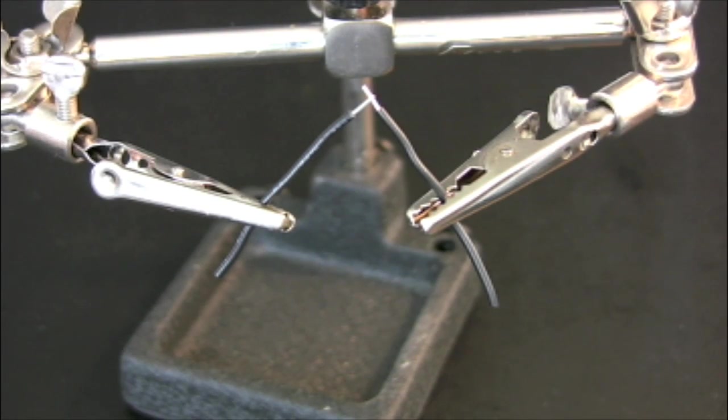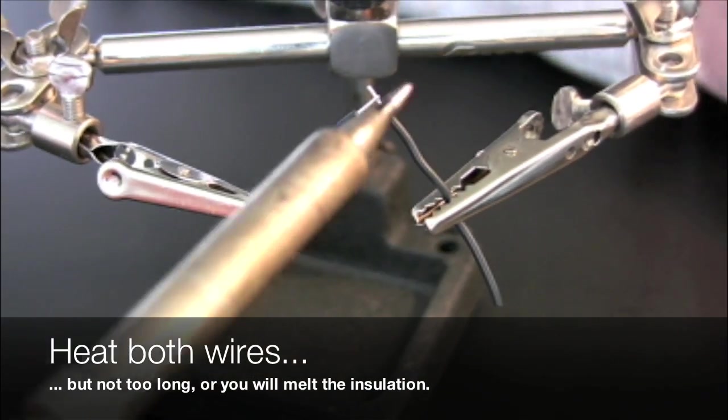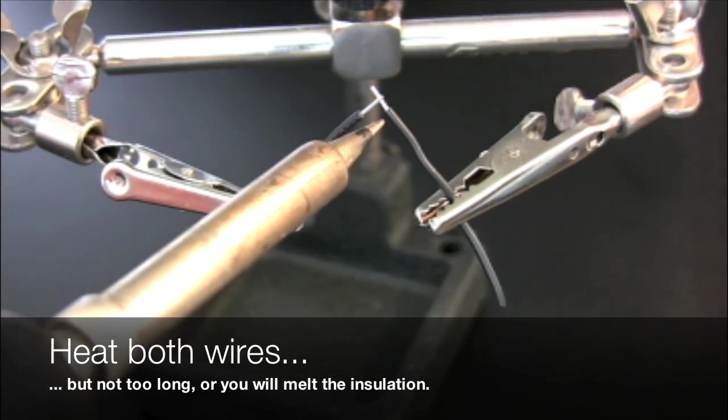Soldering is a process that has been practiced for thousands of years. To create a solder joint, we heat two base metals, in this case, the wires, and bring a third metal or alloy that melts at a low temperature into contact.